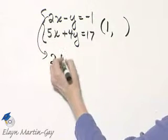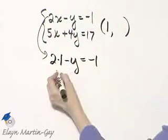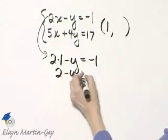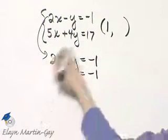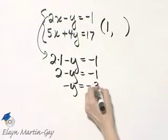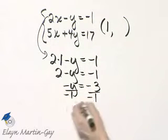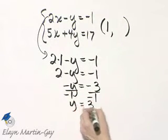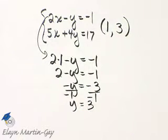Let x be 1, and we'll solve for y. So that's 2 minus y is negative 1, or negative y is negative 1 minus 2, or negative 3, and then I'll divide both sides by the coefficient of y, and I'll have y is 3. So the corresponding y value is 3.